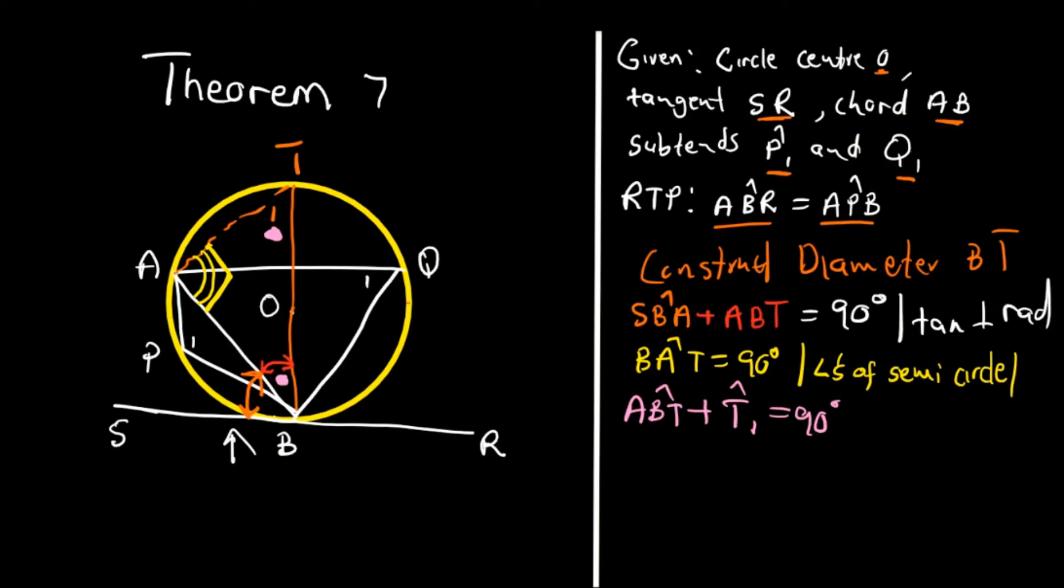Now we've proven that BAT is 90 degrees, and the addition of these is equal to 90 degrees. So if we substitute, for this one here, it means that if we're going to say angle ABT is equal to 90 degrees minus T, and we substitute it to this equation here, meaning that SBA plus, instead of writing ABT, we'll write this here, plus 90 degrees minus T is equal to 90 degrees.